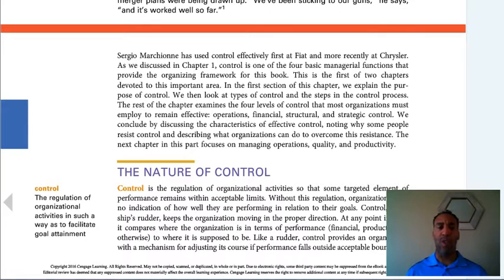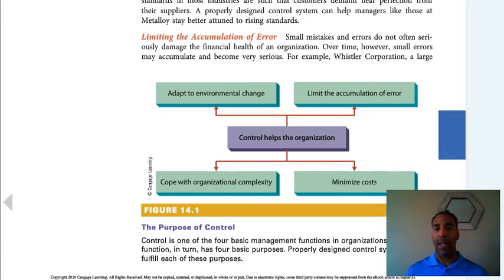The nature of control. Control is the regulation of organizational activities in such a way as to facilitate goal attainment. So it could be control in the sense that you need to be at work on time every day, or control in regards to the fact that the sales team needs to hit their quotas. There are different controls in all kinds of different areas — it could be budget. You have to control the budget, and control definitely has a lot to do with finance and things that can happen that you really don't want to happen within your company.